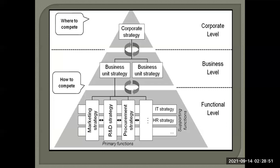At the corporate level, Hindustan Unilever decides how to compete with Procter & Gamble, Patanjali, Nestle, and other big companies. At the strategic business unit level, Hindustan Unilever decides how to allocate resources to different SBUs like soap manufacturing, food manufacturing, oral care, and personal care manufacturing units.